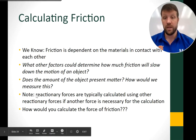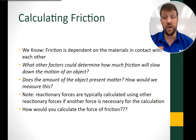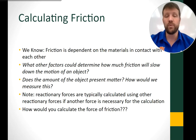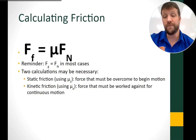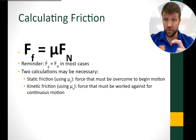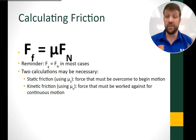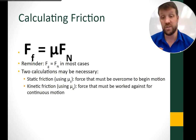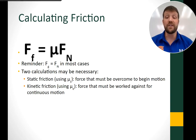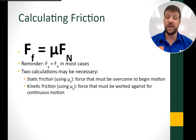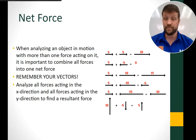When calculating friction, the force of friction equals the coefficient of friction times the normal force: F_f = μ × F_N. In many cases, gravity and the normal force are equal — for an object resting on a desk. Use μ_s for static friction and μ_k for kinetic friction, depending on whether the object is stationary or moving.